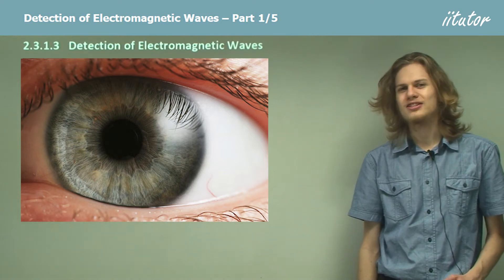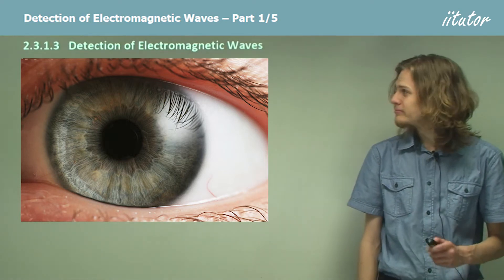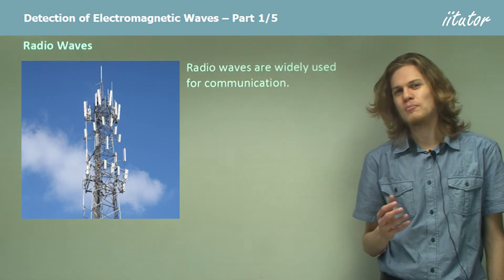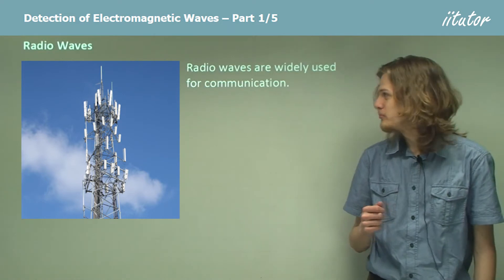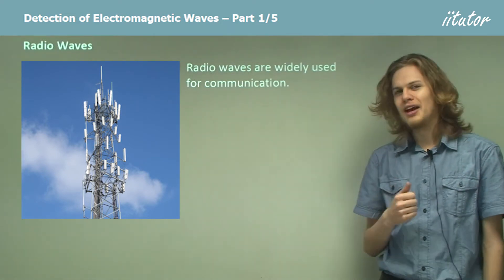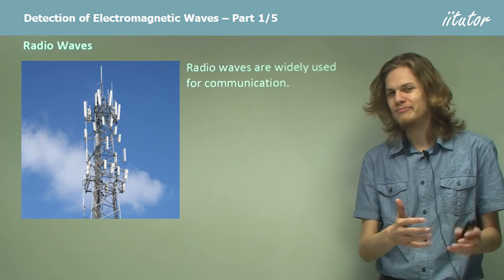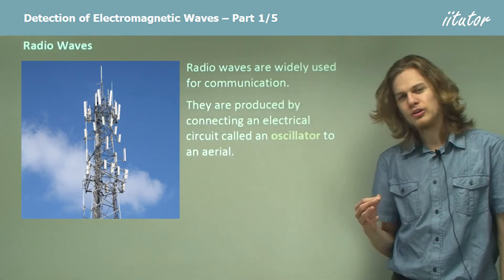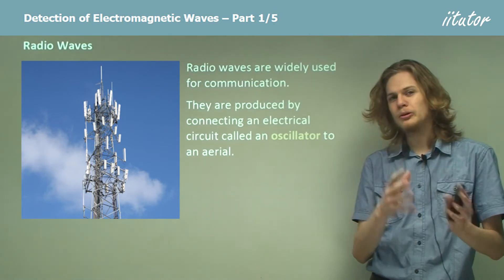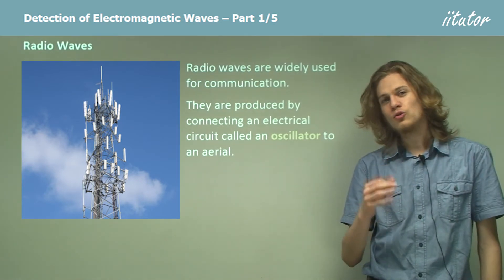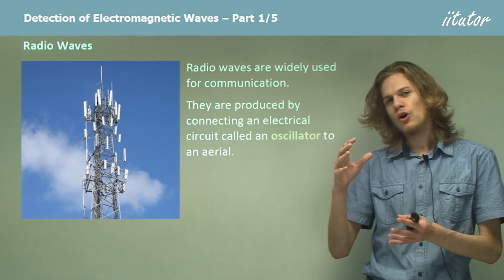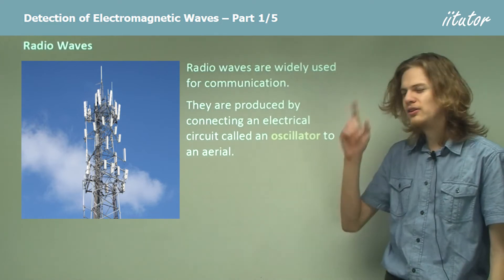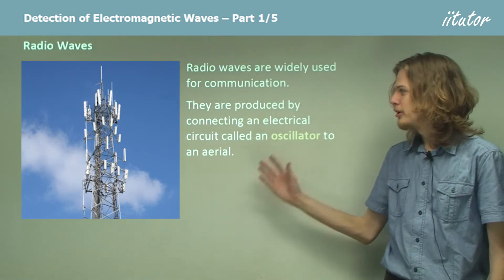Let's start off with the lowest energy type. Radio waves are of course the least energetic type of electromagnetic wave. We usually use them for communication — that's why we have radios. They're produced by connecting an electrical circuit called an oscillator to an aerial. The oscillator will oscillate electrons back and forth through the aerial, and this jiggling back and forth will produce radio waves.